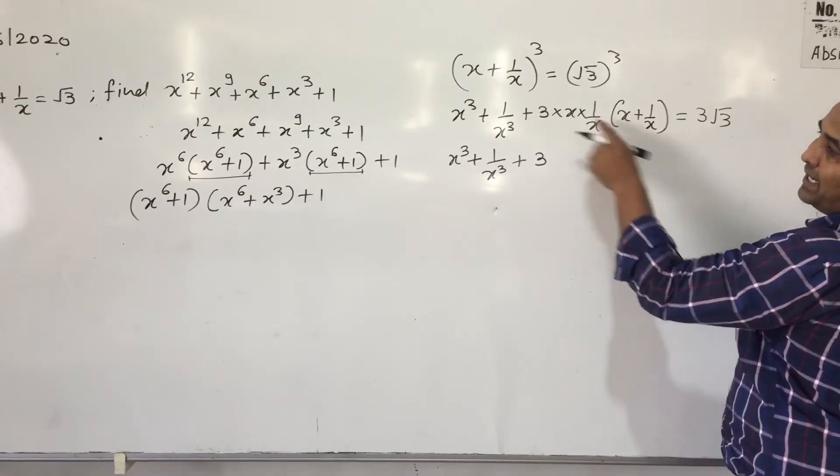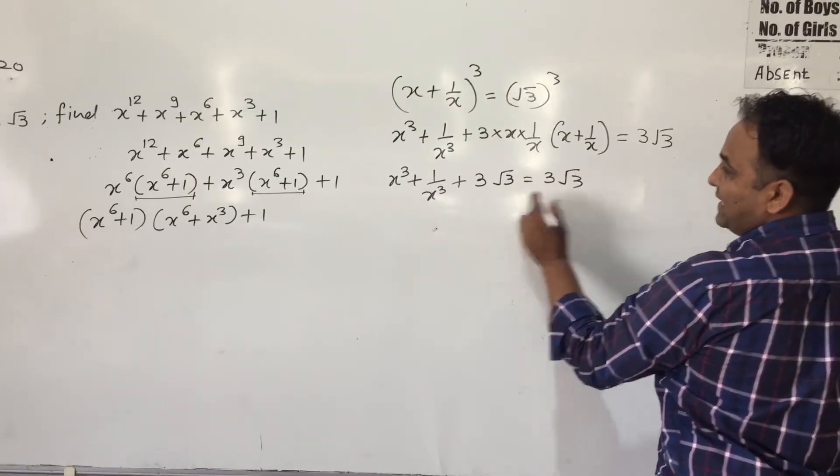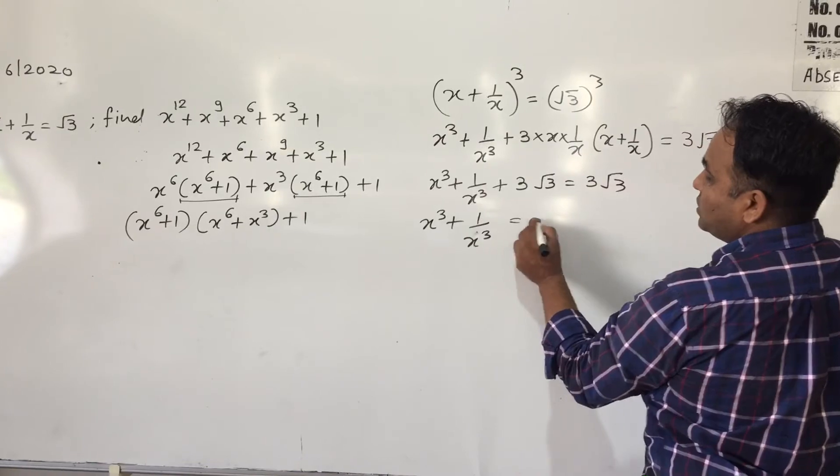Now x + 1/x is √3, given in the question. Now this will get cancelled out, so we will get x^3 + 1/x^3 equals to 0.